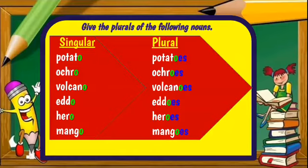So the plural of those singular nouns: potato — potatoes, okra — okras, volcano — volcanoes, edo — edos, hero — heroes, and mango — mangoes. All singular nouns ending with O: to form the plural, we add ES.